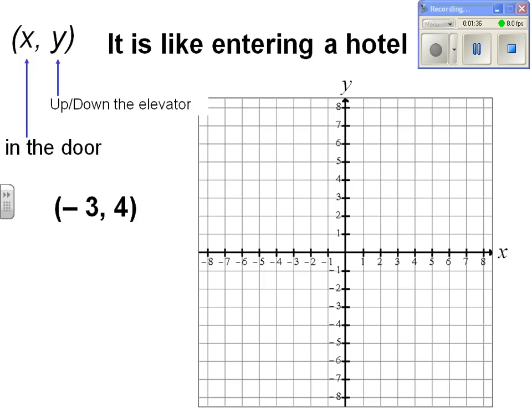For example, let's say I have (-3, 4). So -3 tells me to move on the horizontal plane, that is the x-axis, and 4 tells me to move along the y-axis. And therefore, this is how I get my point (-3, 4).